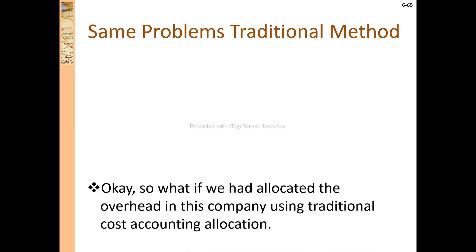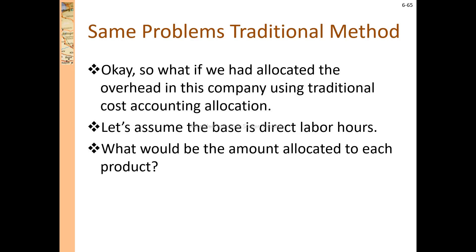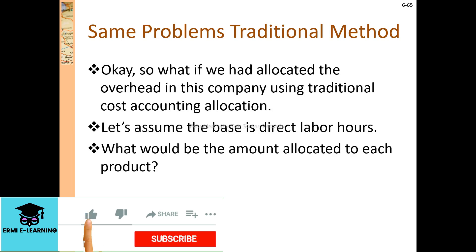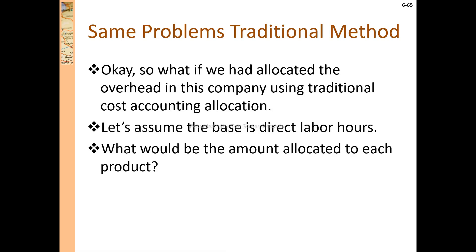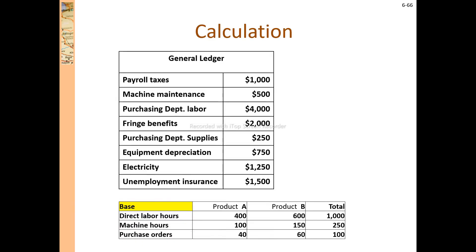So if we had a cost allocation rate in this company using traditional cost allocation base — assuming the base is direct labor — what would be the amount allocated to each product by the traditional method? To calculate this, we need the total cost of all overhead rates and a fraction of ownership.